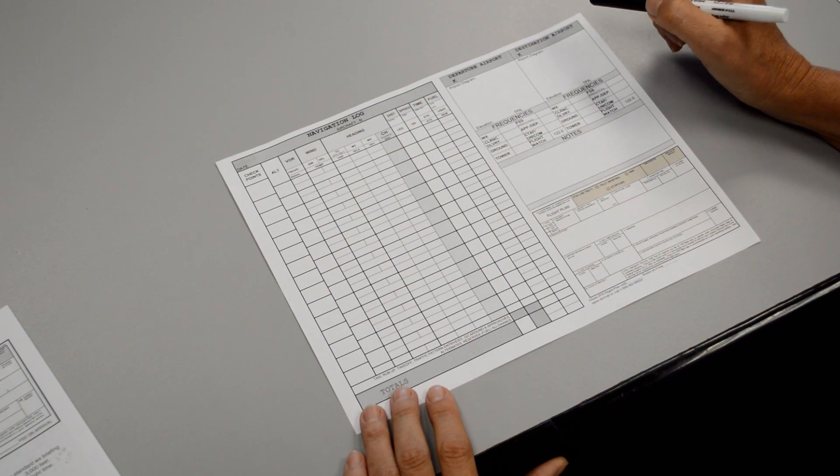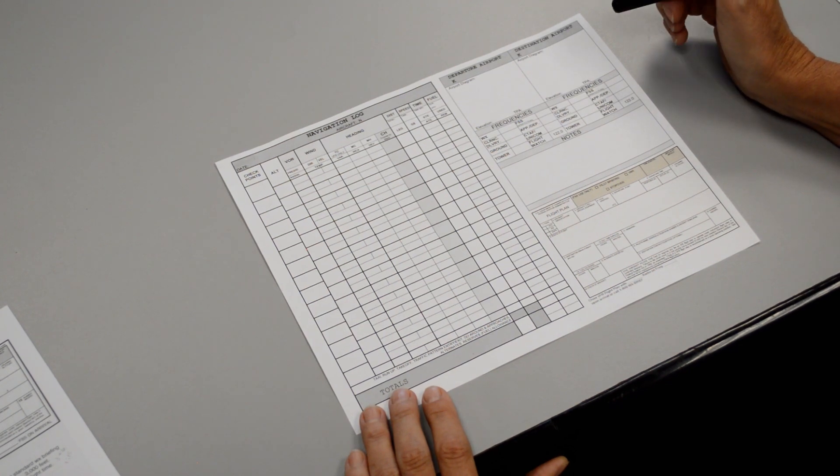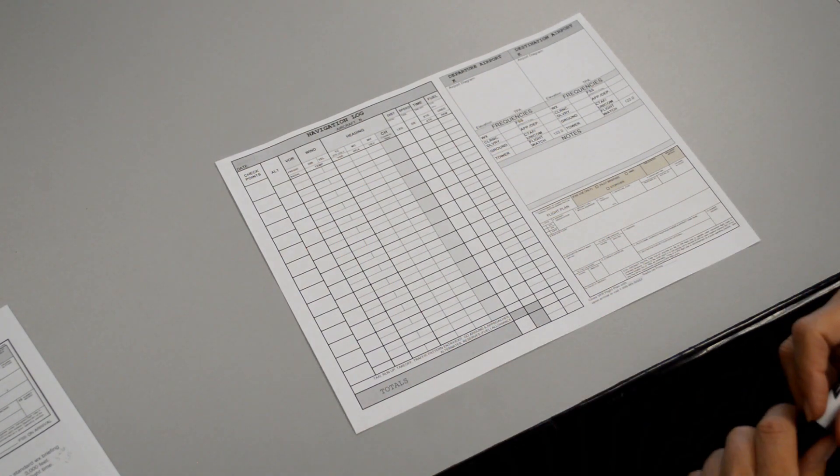Lesson 8 on our cross-country flight plan involves calculating out a portion of our climb. What we're interested to know is how many minutes will it take us to arrive at our cruise altitude.